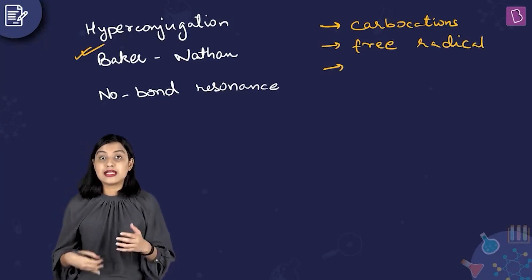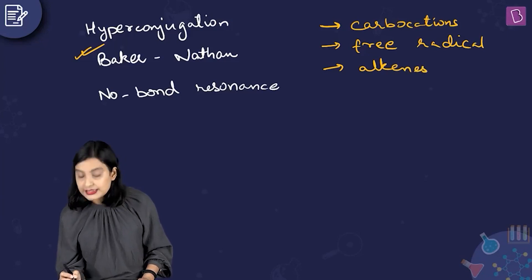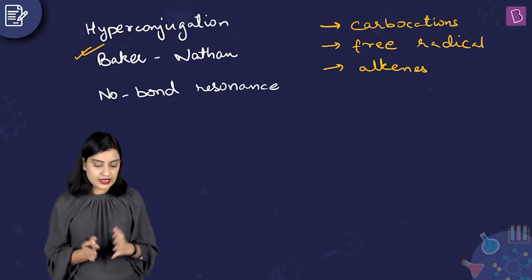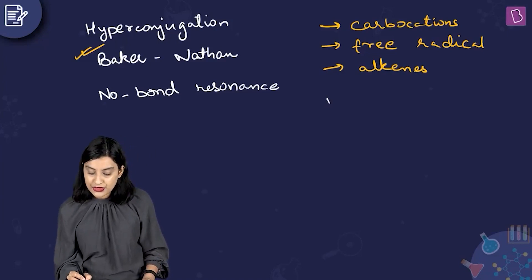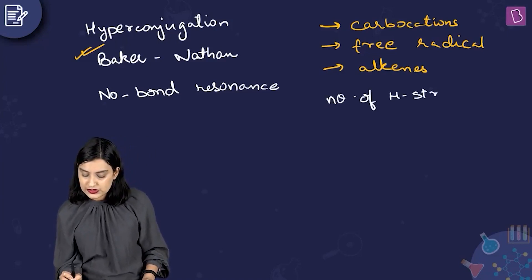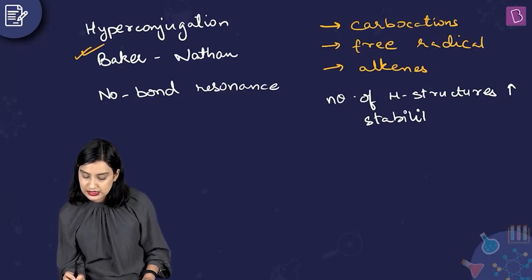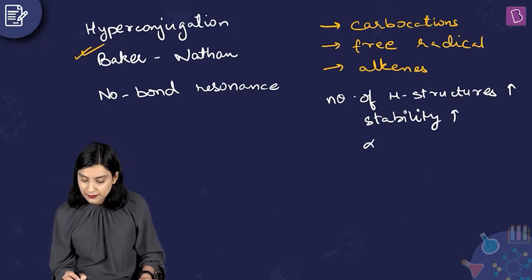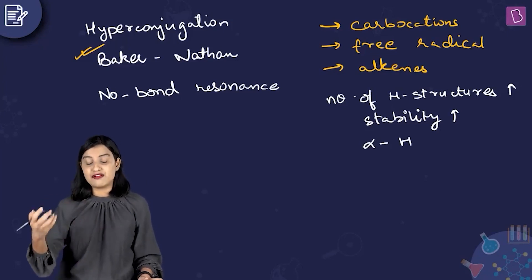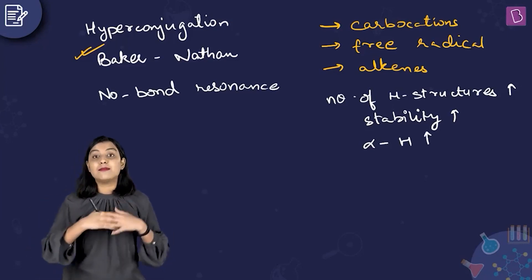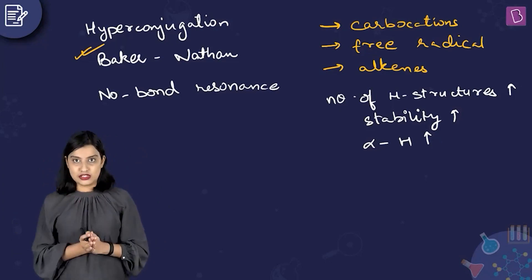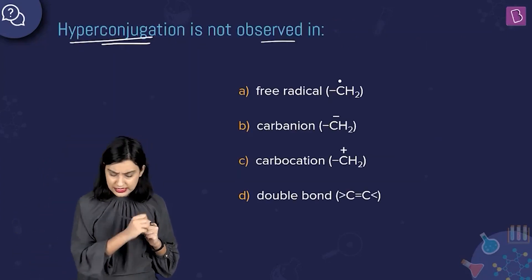This electronic effect is seen majorly in carbocations and it is responsible for the stability of carbocations and free radicals, as well as in determining the stability of alkenes or places where you have double bonds. As the number of hyperconjugating structures increases, the stability of the structure increases. That depends on the number of alpha hydrogens.